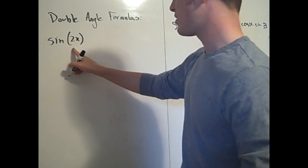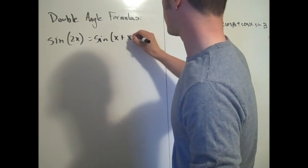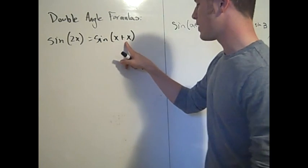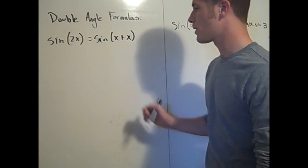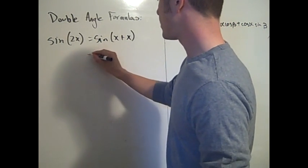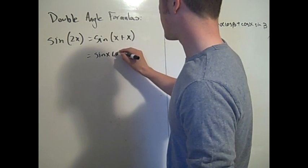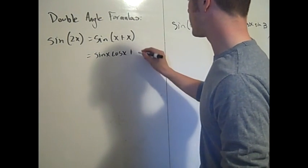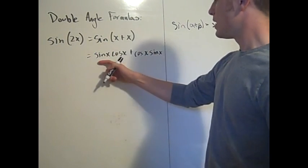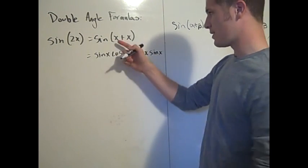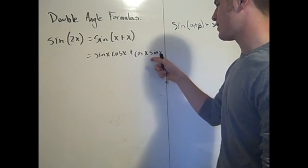you can think about the sine of 2x as being the sine of x plus x. Now we can use exactly the sum formula for sine. The sum formula for sine says take the sine of the first one times the cosine of the second one, plus the cosine of the first one times the sine of the second one. So sine of 2x as sine of x plus x is sine x cosine x plus cosine x sine x.